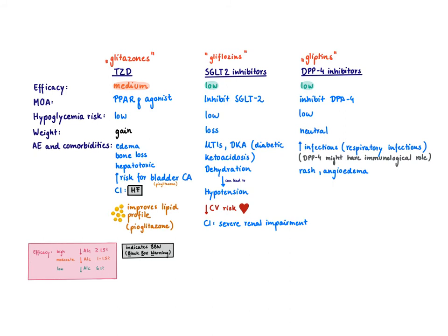As their effect on the pancreatic beta cell is dependent on glucose, they don't kick out extra insulin. Therefore, we have a low risk of hypoglycemia, and they are weight-neutral. Because DPP-4 might have an immunological role, we see in these patients an increased risk of infections, particularly respiratory infections. Rashes and angioedema have been reported. DPP-4 might also be involved in the breakdown of bradykinin, which could explain the angioedema risk.